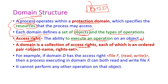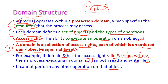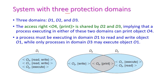A domain is a collection of access rights, each of which is an ordered pair of a domain object and a right set. For example, if domain D has access rights for an object named 'file' with rights 'read' and 'write', then the process executing in that domain can read or write that particular file. It cannot perform other operations — for instance, it cannot delete content in that file.